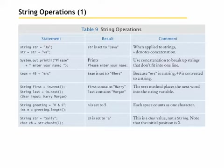Team equals 49 plus er. It converts the 49 to a string and then concatenates it together with ers. Then we have string first equals in dot next. If we type in Harry, that will put Harry in first. And then if we type in Morgan, that will put Morgan in last.